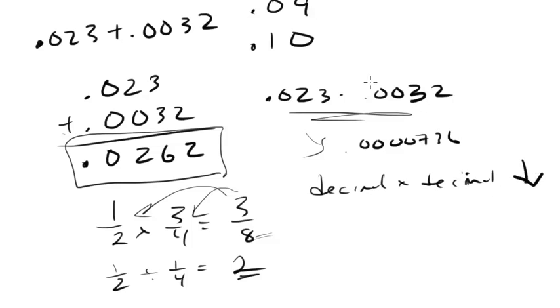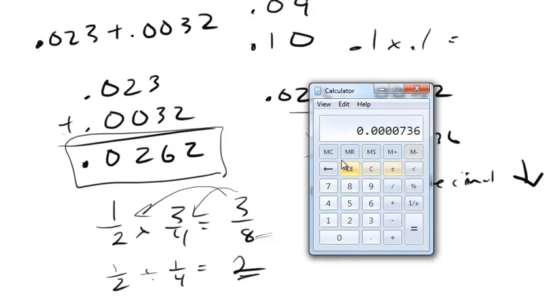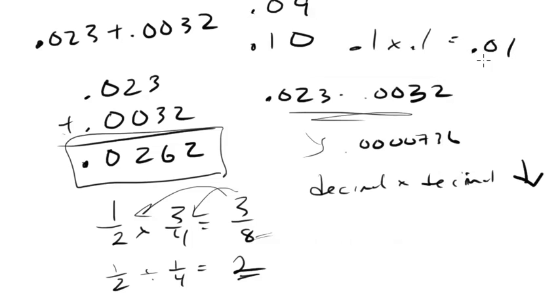So a decimal times a decimal, just like with a fraction, will make the number go down. So in this case, let's do another one, 0.1 times 0.1. If we do that, we're going to get 0.01. So this answer goes down from the original choices. So whenever we multiply decimals, they go down.